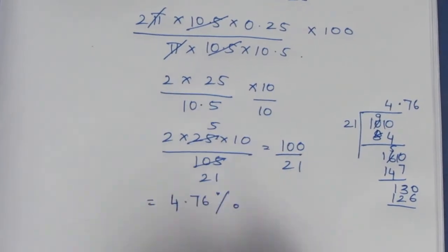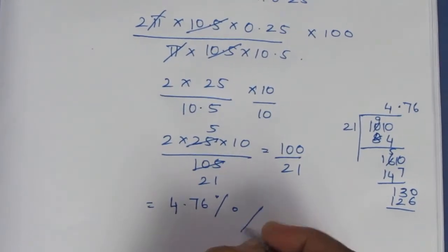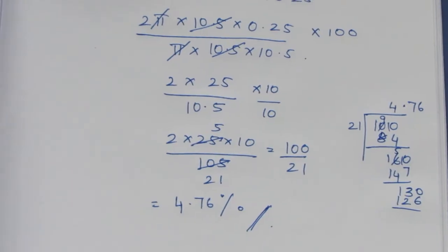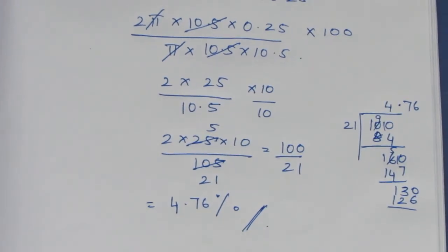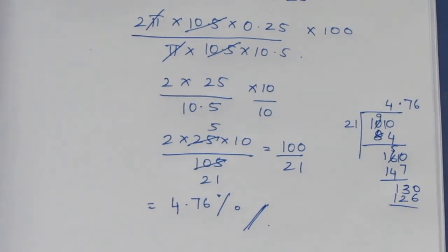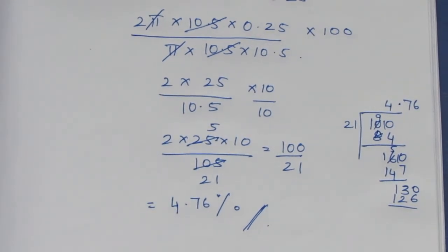This is the approximate change in the area. The approximate change formula is dA by A into 100. If you go through the calculation path and solve by multiplying, we can do the sum. If you cancel appropriately, we can also do the sum that way. That is the sum — thank you.